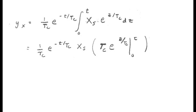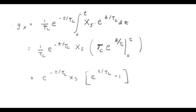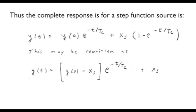Since the step function equals unity for t greater than zero, we integrate the exponent e to the z over tc, which provides one over tc times the exponent evaluated between limits zero and t. Carrying out those limits yields that the integral equals x_s times e to the minus t over tc times the quantity e to the t over tc minus one. Adding both terms together — the integral term and the initial condition term — and simplifying with a little algebra, we can rewrite the right-hand side as the quantity y(0) minus x_s times e to the minus t over tc, plus x_s.